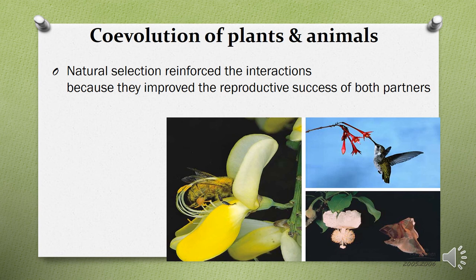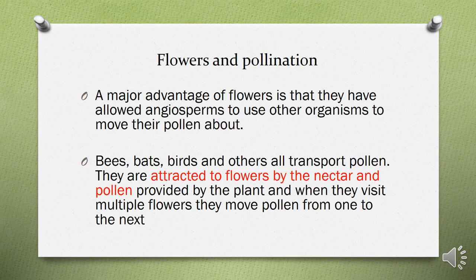As far as the co-evolution of plants and animals is concerned, animals and birds help plants with pollination. Natural selection reinforces these interactions because they improve the reproductive success of both partners. A major advantage of flowers is that they allow angiosperms to use other organisms to move their pollen. Bees, bats, birds, and others transport pollen from one flower to another, attracted by nectar and pollen provided by the plant.